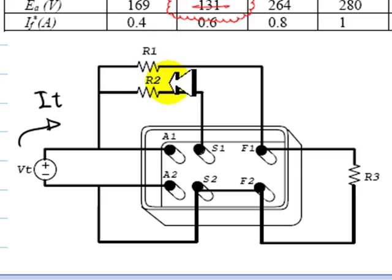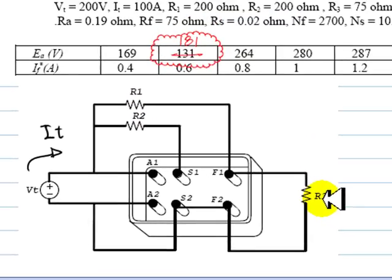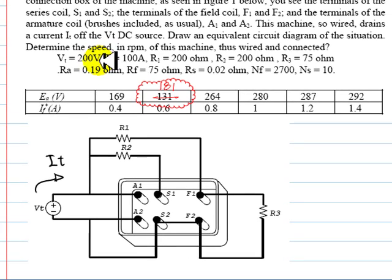Externally to that motor there is a DC source VT and three resistors R1, R2, and R3. All those values are given: VT is 200 volts, IT this current is 100 amps. R1, R2, and R3 are given, and the resistances of the armature, the shunt coil, the series coil, the number of turns in the shunt coil and in the series coil are also given. The question is, draw the equivalent circuit of this situation first, and then determine the velocity of rotation of the machine in rpm wired like so.